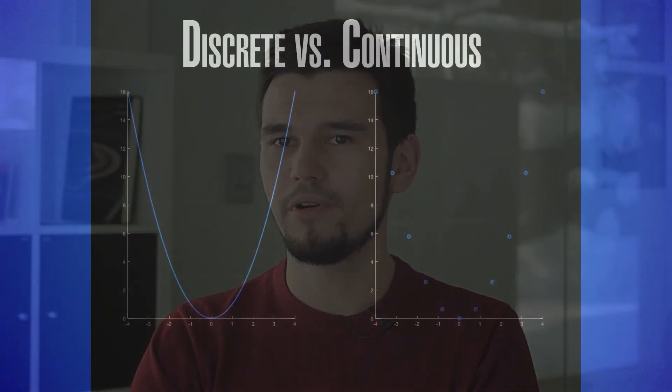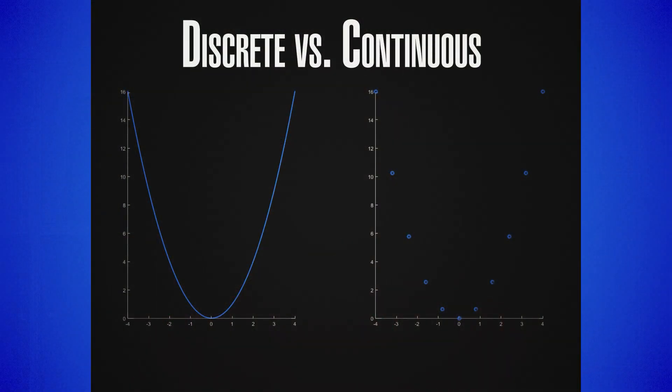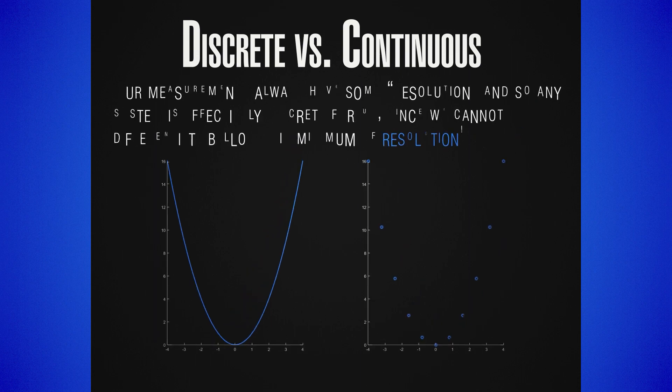We saw in the Fourier series and Fourier transformations that the difference between a discrete and a continuous spectrum would be a periodic or a non-periodic signal. But it's very important to understand how we can represent one with the other, because of the fact that all machines operate with discrete quantities — we cannot truly represent a continuous signal as such, since in any machine we have a definite resolution.